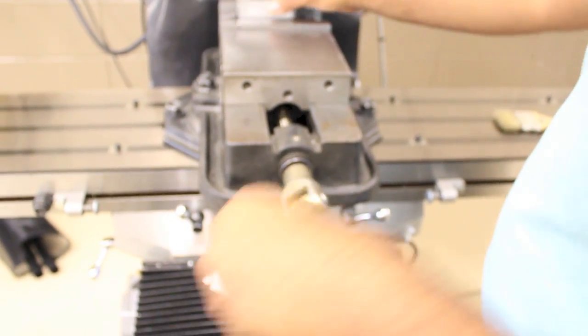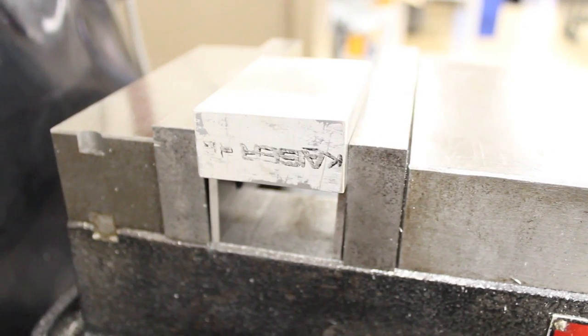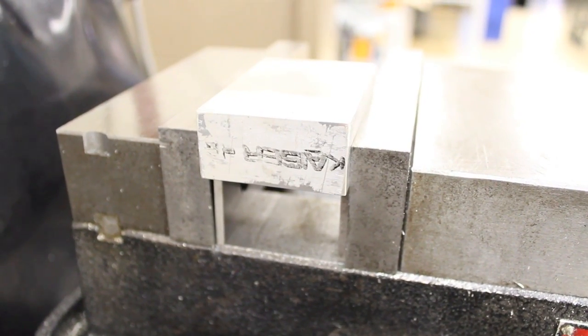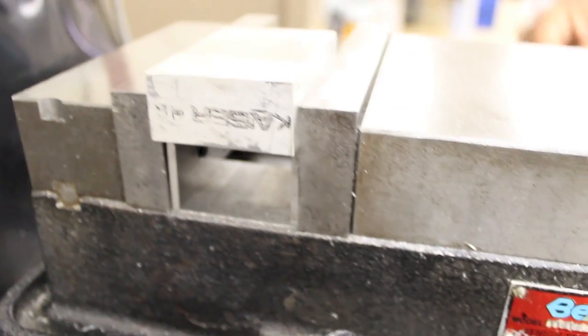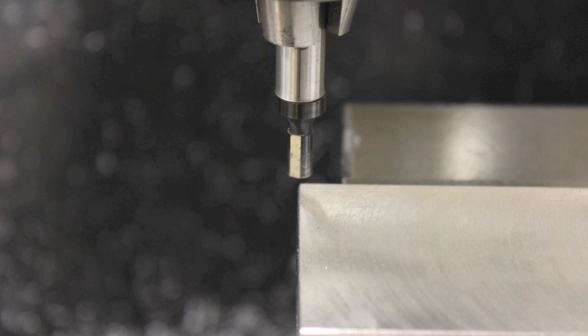The reason that the corner is chosen to set the work zero point is because all of the part features can be referenced back to this location. It is also very simple for a machinist to find this corner position.